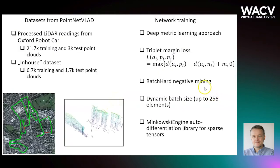To train our network, we use a classic deep metric learning approach with triplet margin loss. We use batch-hard negative mining to mine informative training triplets. During experiments, we noticed that with large batch sizes, the training process is prone to collapse, where all embeddings approach the same value. To overcome this difficulty, we use a simple and effective dynamic batch sizing strategy.